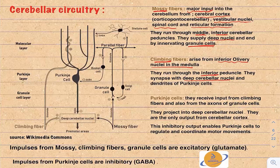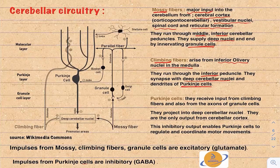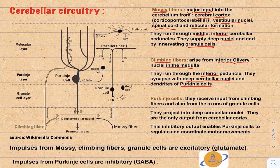Climbing fibers end by synapsing with the dendrites of Purkinje cells. A helpful mnemonic: climbing fibers, since they are climbing, synapse with the higher cells — the Purkinje cells. Mossy fibers, since they are not climbing, synapse with the lower cells — the granule cells.